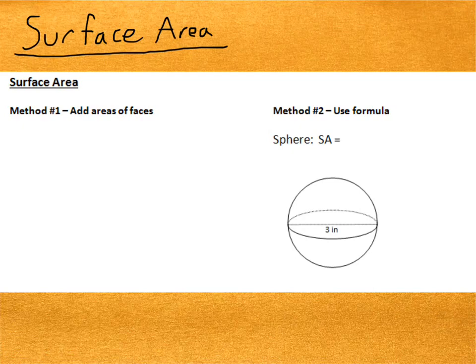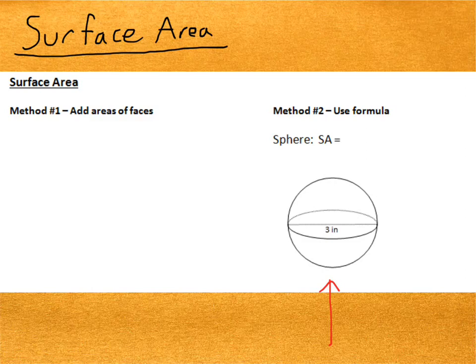Alright, so we're going to find the surface area of this sphere here, which has a diameter of 3 inches. Let's apply the two different methods that we've used for the other shapes. The first method was to add the areas of the faces.